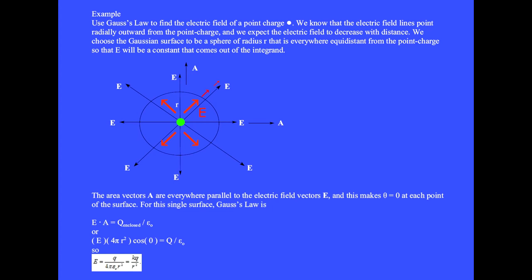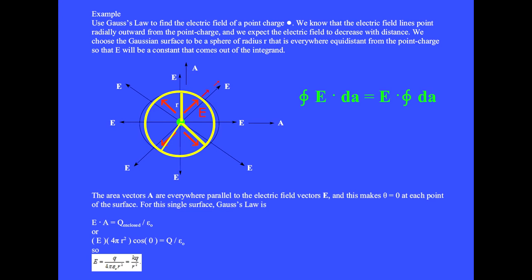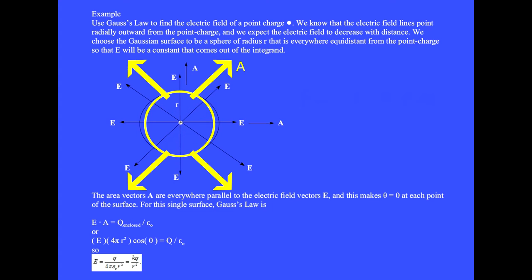We will use Gauss's law to find the electric field of a point charge. We know that the electric field lines point radially outward from the point charge and we expect the field to decrease with distance. We choose the Gaussian surface to be a sphere of radius r that is everywhere equidistant from the point charge, so that E will be constant and come out of the integrand. The area vectors A are everywhere parallel to the electric field vectors E, making theta equals zero at each point on the surface.